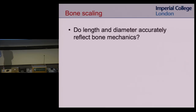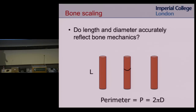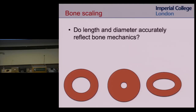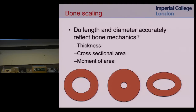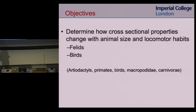We ask: do the length and diameter accurately reflect the bone mechanics? Say you have three bones that are all the same length. You take a tape measure, measure the perimeter, assume it's a circle, and calculate the diameter — finding they're all the same. But if you look at the cross-section, they're very different. Things like the thickness of the cortical bone, the cross-sectional area, and the moment of area — a geometric measure of bone strength — are all important. The objective of this work was to determine how these cross-sectional properties scale with animal size and also with locomotor habits.